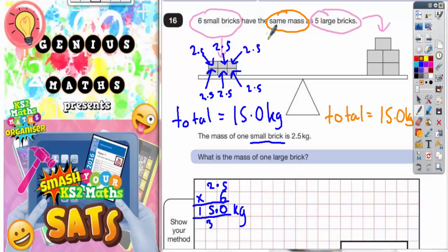So the total of the five large bricks must also be 15.0 kilograms, because it says it's got to be the same. So 15 on this side, 15 kilograms on this side. That's why it's balanced on the scale.